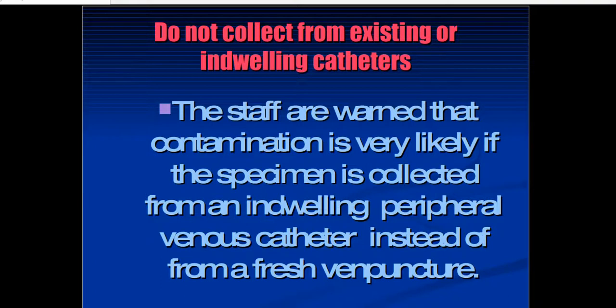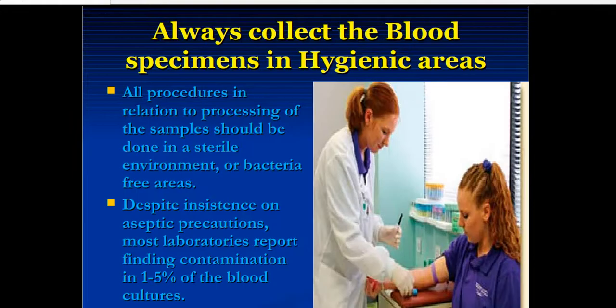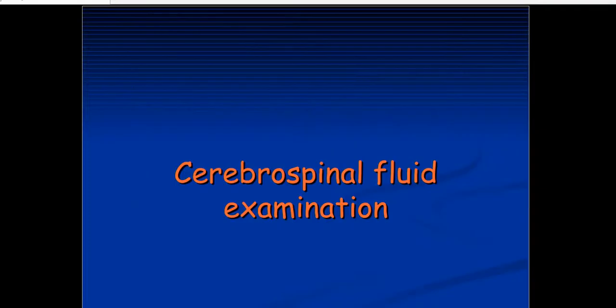Proper handling of the syringe is essential to obtain a blood specimen. Do not collect from existing or indwelling catheters — when collecting blood, you should not collect from already inserted catheters or existing IV cannulas. Always collect blood specimens in a hygienic area; where the sample is being collected, that area should be clean and hygienic.